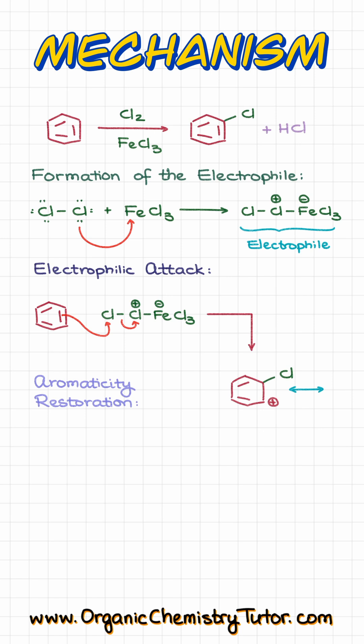Finally, we restore aromaticity by removing this hydrogen with the leftover from the electrophile, giving us our final product. HCl is the co-product, and we also regenerate the catalyst, iron chloride, which can go back into the reaction and do another cycle.